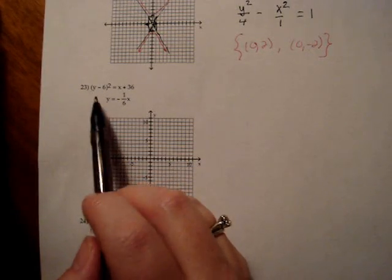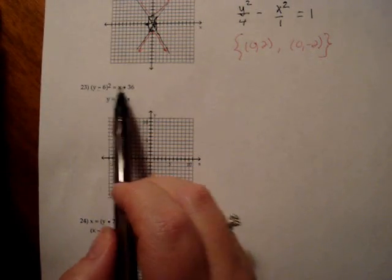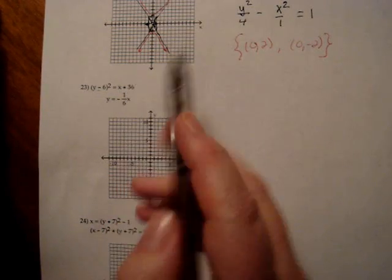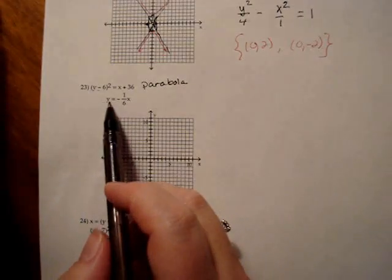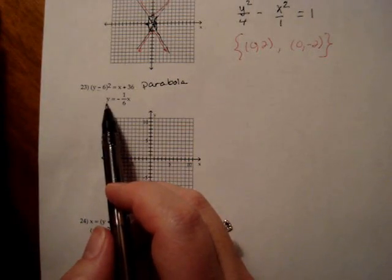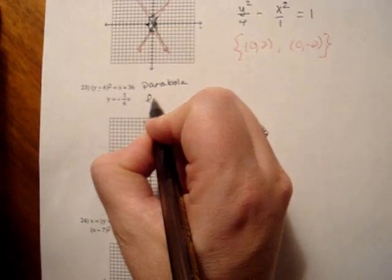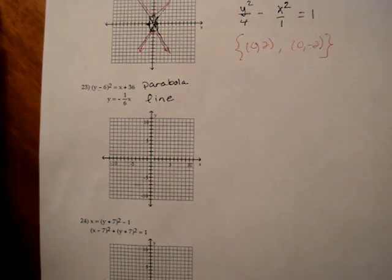When we look at 23, I see that only the y portion is squared and not the x portion. So I know this is a parabola. When I look at the second equation, that's just a line. So you're just going to graph that line.